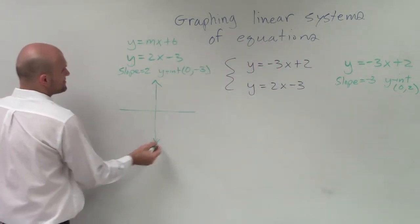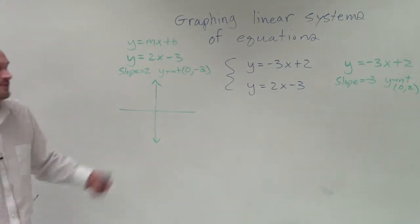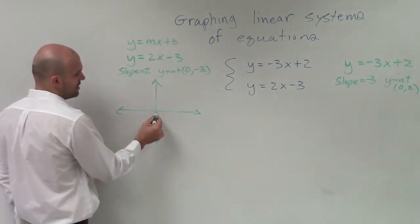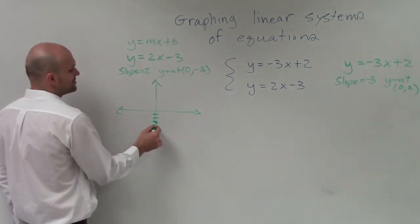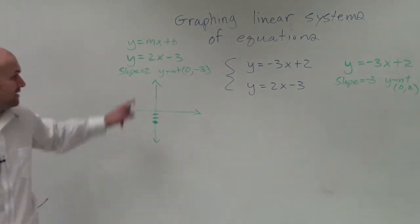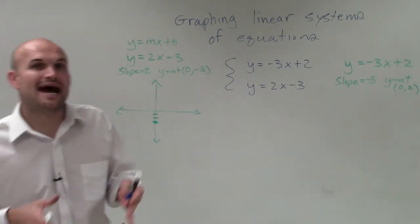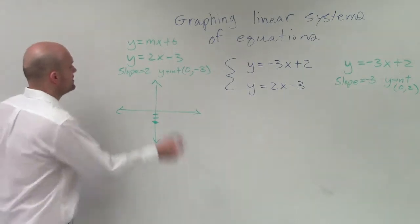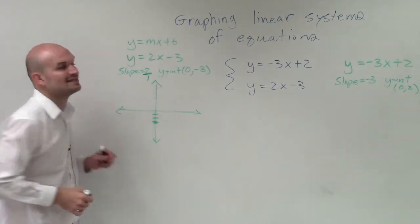So if I wanted to graph something, the first thing we do is we plot the y-intercept, which in this case is at negative 3. So I go down 3, 1, 2, 3, and we make a nice little dot at the y-intercept. Now the slope, remember, the slope tells me how to transfer from one point to the next on our linear equation. So the best thing to do is to rewrite it as a fraction.